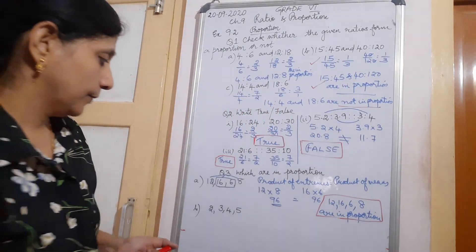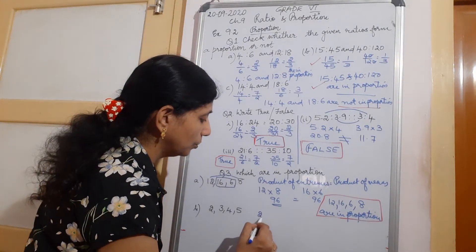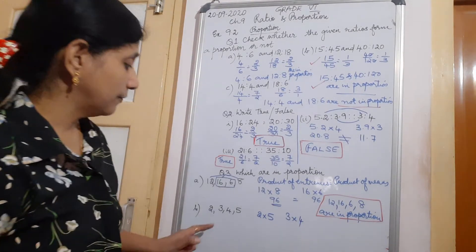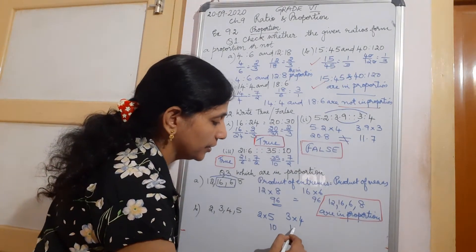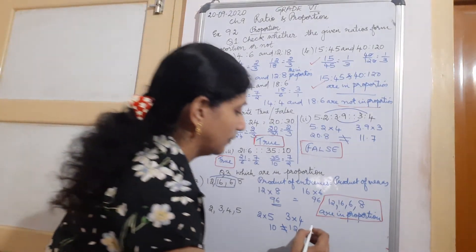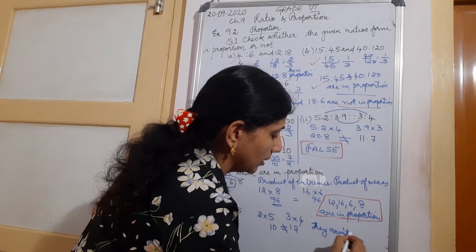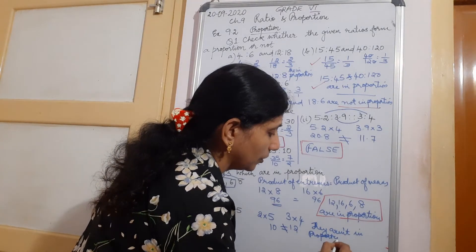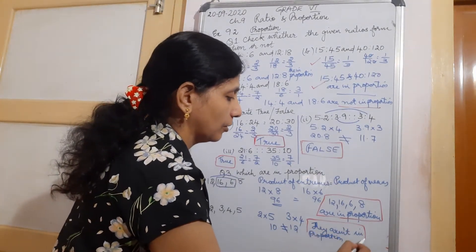Next: numbers 2, 3, 4, 5. We calculate 2 into 5 and 3 into 4. By inspection: 2 into 5 is 10 and 3 into 4 is 12. So they are not equal, meaning 2, 3, 4, 5 are not in proportion.